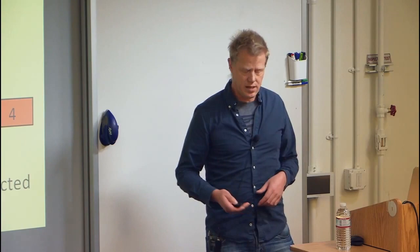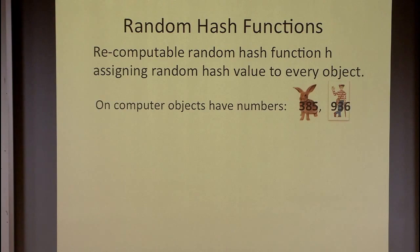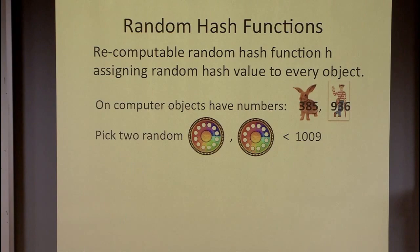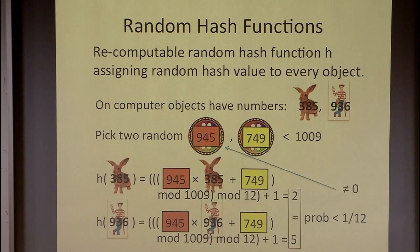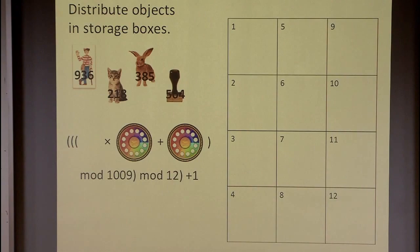So what can we do? We want a recomputable random hash function — no longer fully random. On computers, things have numbers; they're all only three-digit numbers, and now we just pick two of these three-digit numbers below a certain prime, and then we create a mathematical formula based on these two numbers that tells us where everything goes, because we just plug it into the formula. If we just make sure that the first number is not zero, then the probability that two things get the same hash value is one over the table size, which is exactly what we're hoping for. So now we know how to create a storage system — we just pick two random numbers, and now we have our formula.